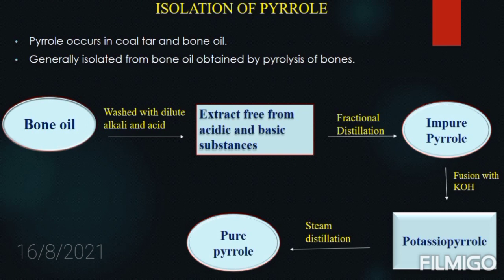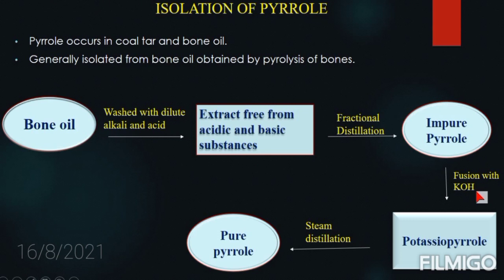For the commercial isolation of pyrrole from bone oil: first, the bone oil is taken in a large container. It is extracted and freed from acidic and basic substances by washing with dilute alkali and acid respectively. Then it undergoes fractional distillation, yielding impure pyrrole. This is then fused with potassium hydroxide to form potassium pyrrole, which then undergoes steam distillation — since pyrrole's boiling point is below that of water — to give pure pyrrole.